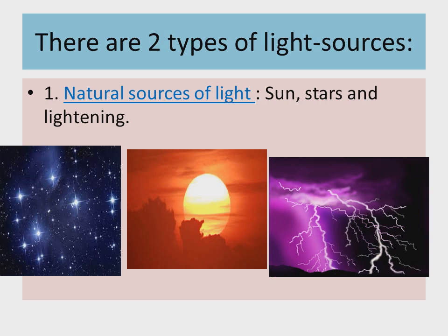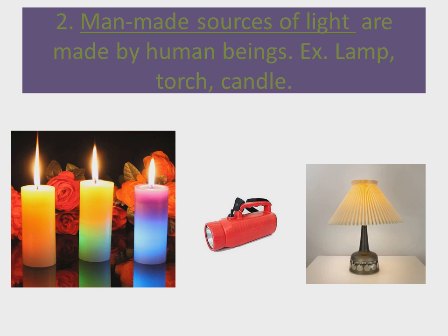There are two types of light sources. Number one is natural sources of light. Natural means anything made by nature — made by Allah. Any natural thing that gives light is a natural source of light. Examples are: the sun, which we can't make; stars, which are also natural; and lightning, which is also natural. You can see pictures of a star, sun, and lightning on your screen — these are the natural sources of light.